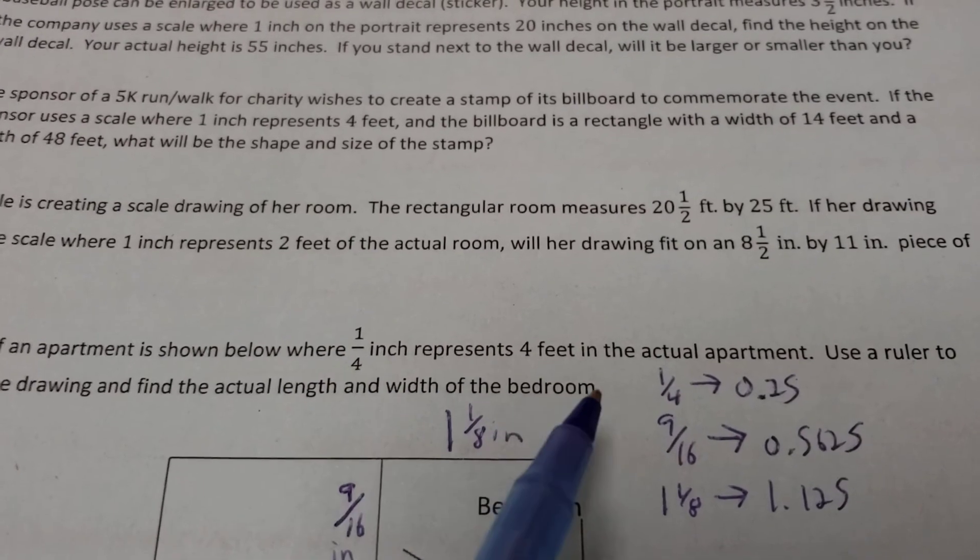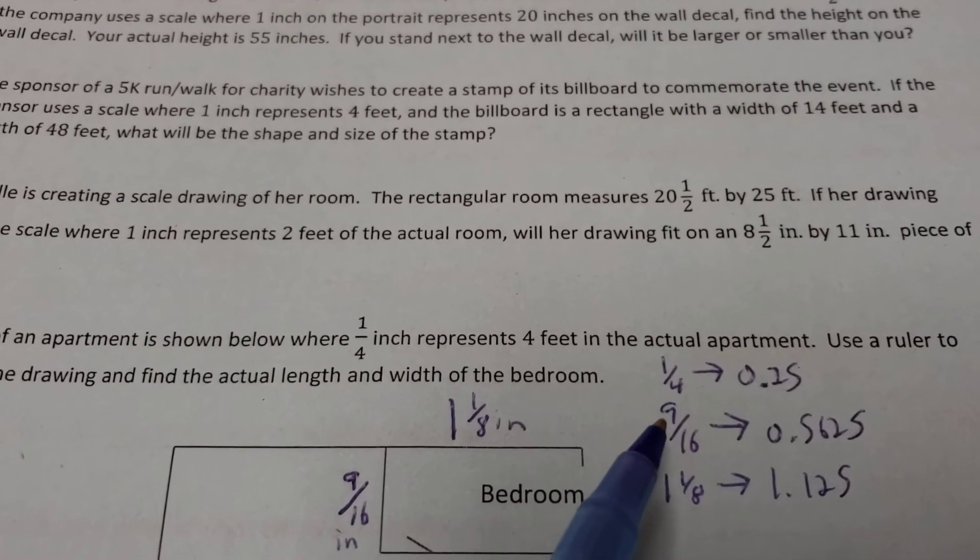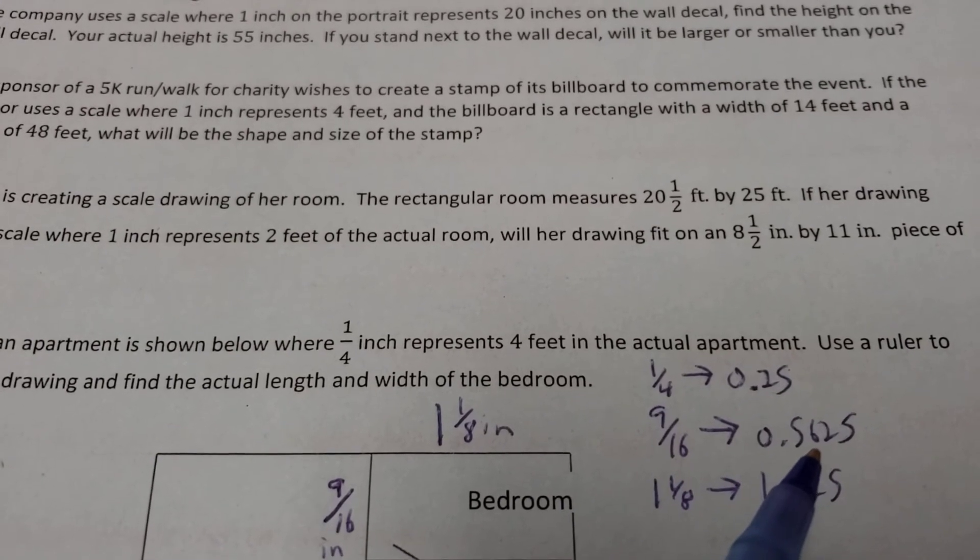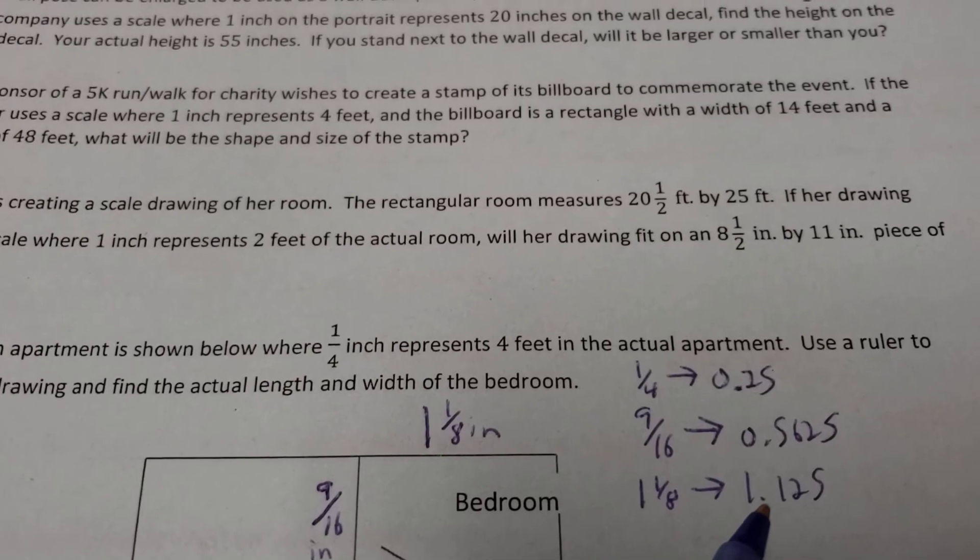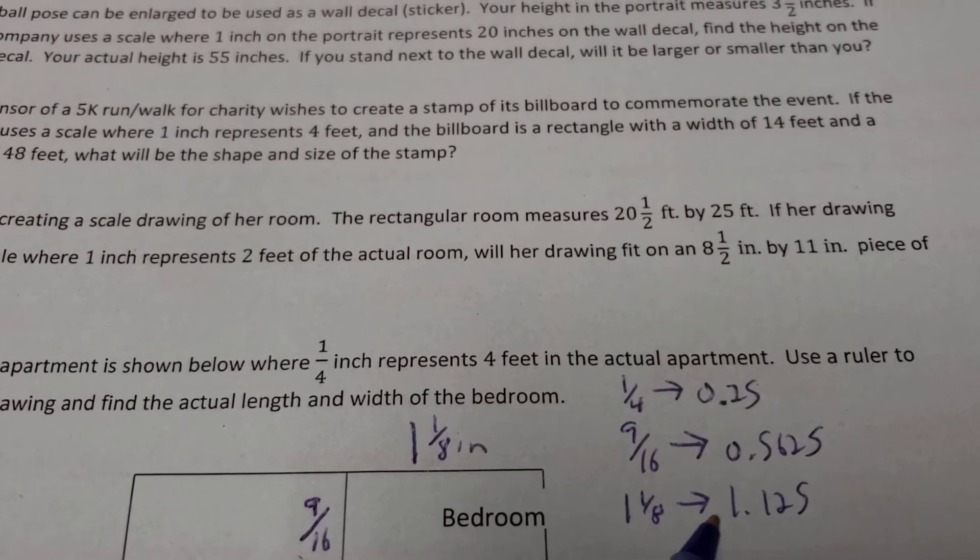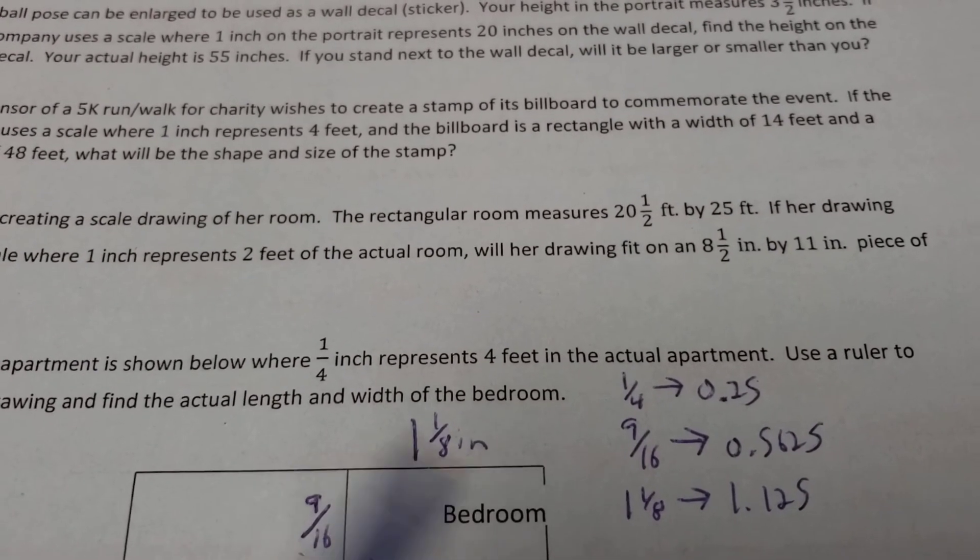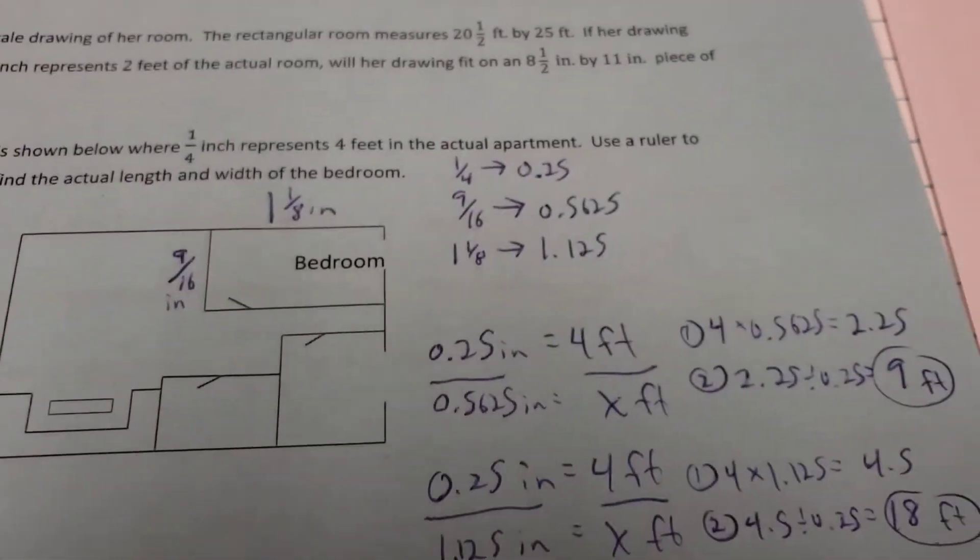1/4, back from my original information, I'm going to use 0.25. 9/16ths. If you take 9 divided by 16 in your calculator, you get 0.5625. And 1 1/8 becomes 1 point. Take 1 divided by 8, and you get 0.125. So 1 point 1 2 5. Those are the numbers we'll use to make it a little easier on our calculators.